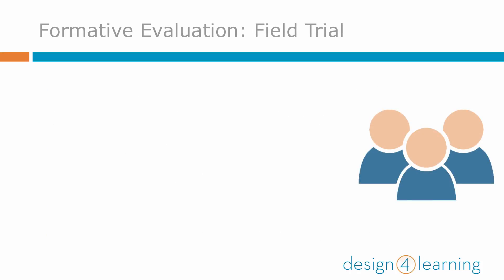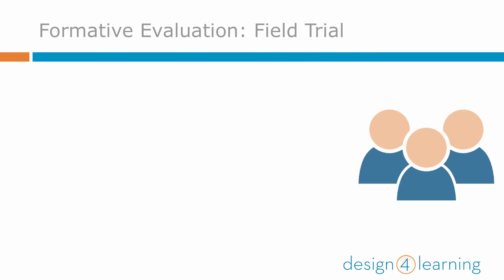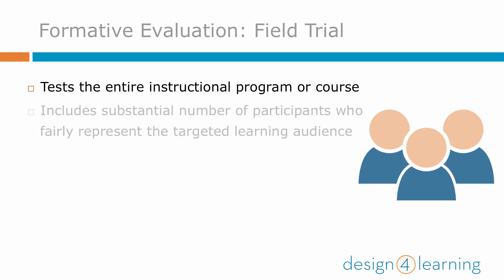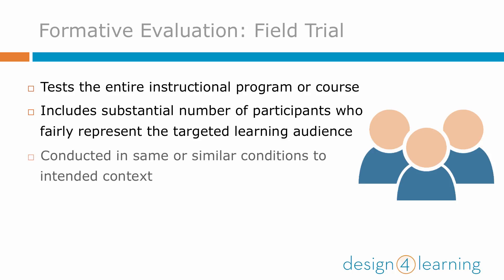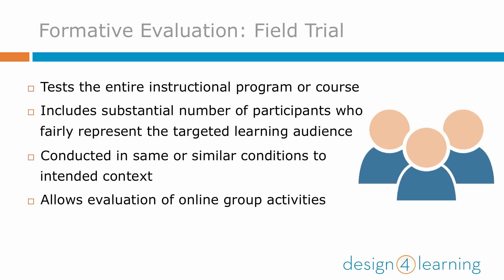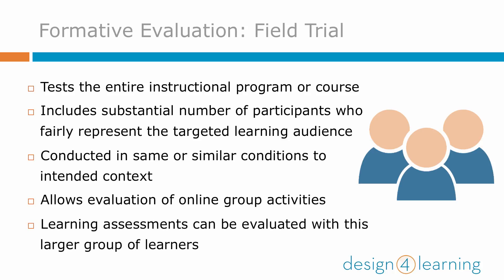For larger budget training programs, the next step is often a field trial of an entire training program or course with a substantial number of participants. These participants must fairly represent the targeted learning audience. Field trials are best conducted in the same or very similar conditions to the intended context. This way you can evaluate the effectiveness of the learning activities that require group participation as well as all of your learning objects. How well students perform as a whole on your learning assessments will also contribute to the big picture of how effective your course or unit of instruction is.